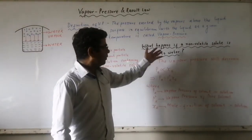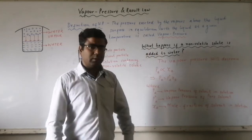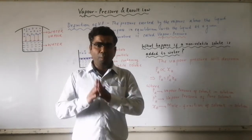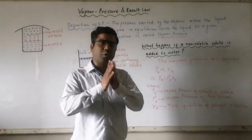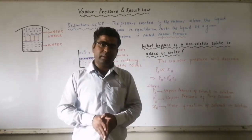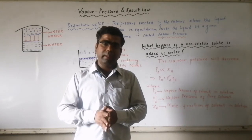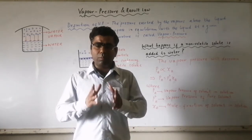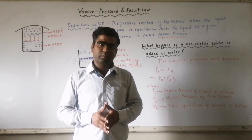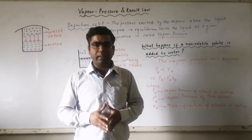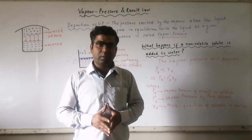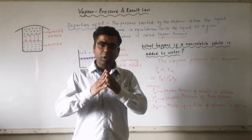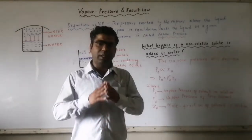So if a non-volatile solute is added to water or any solvent, its vapor pressure will decrease. More the amount of non-volatile solute added, less will be its vapor pressure. We need more concentration of water molecules for getting a higher value of vapor pressure. So vapor pressure can be related with the mole fraction of the solvent molecule — that is water here.